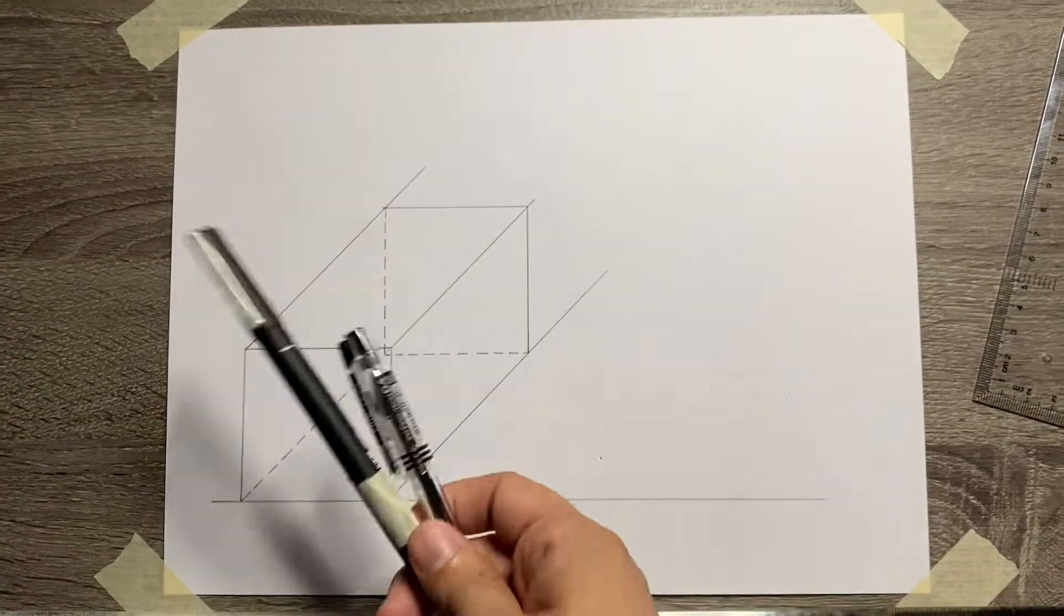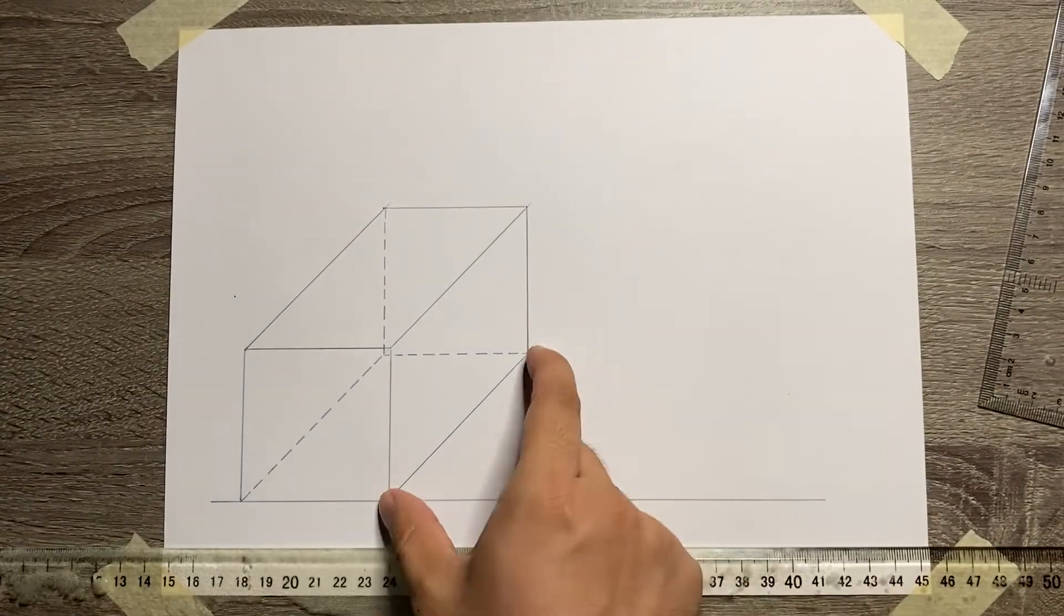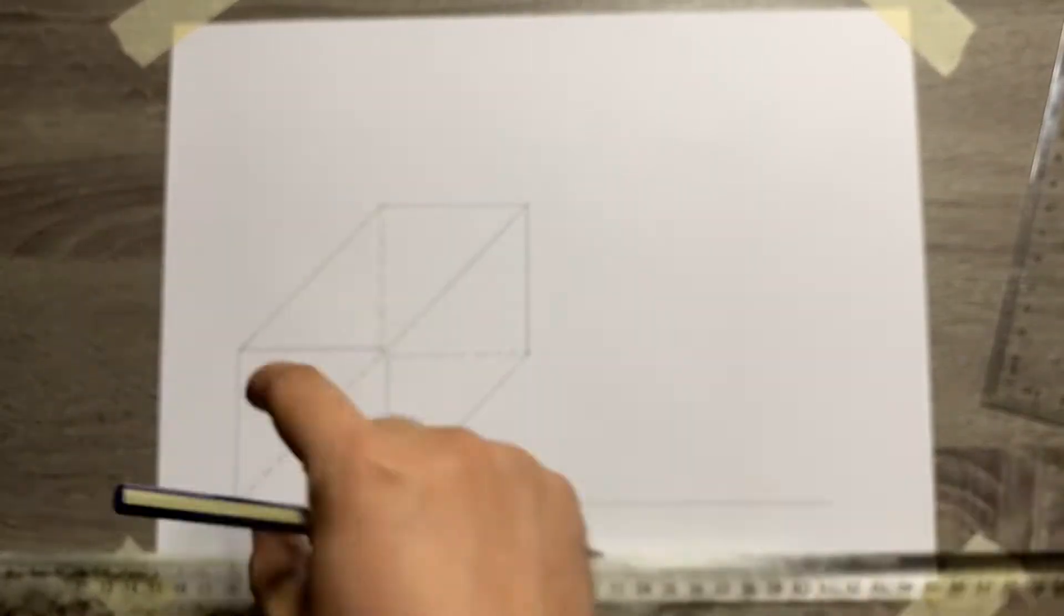So that's it, we're done already with the Cavalier Oblique drawing. Now let's start with the Cabinet Oblique drawing.